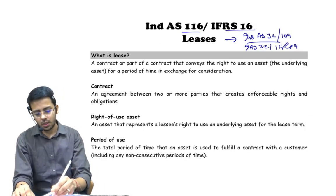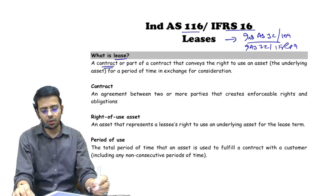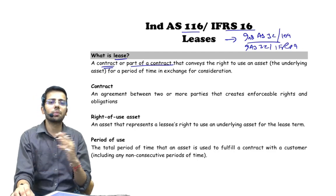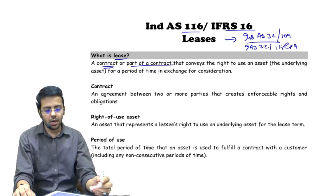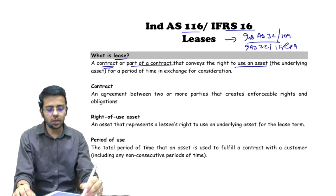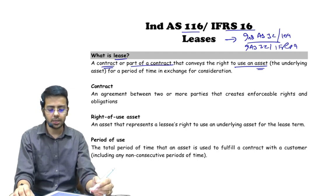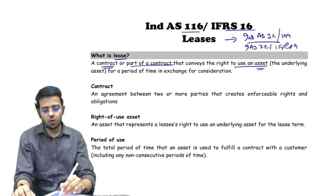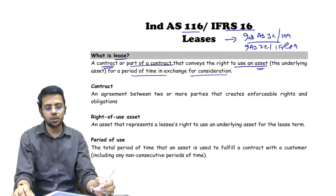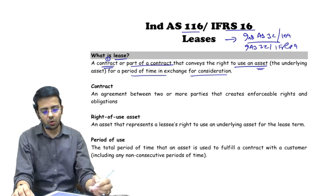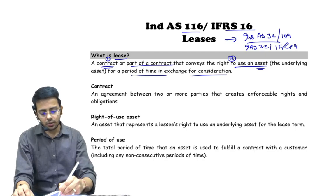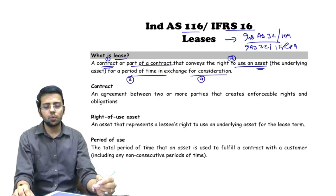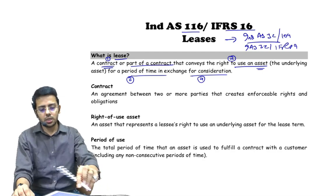A lease is a contract, or it may be a part of a contract, that conveys a right to use an asset — not a service, only an asset — for a period of time in exchange for consideration. So there are four conditions: one, there should be a contract; two, there should be a right to use an asset; three, it should be for a period; four, it should be for a consideration.